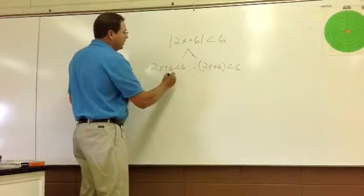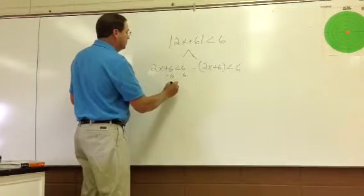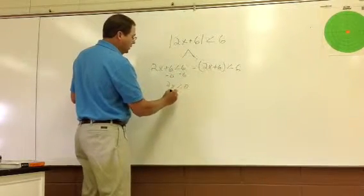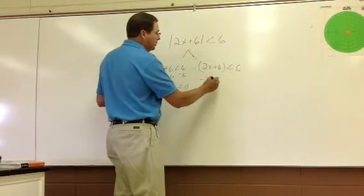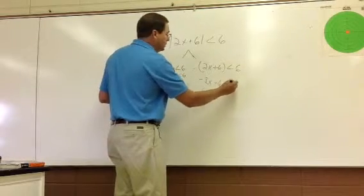So we solve this by moving six over, so x is less than zero. Notice the negative sign in front of the parentheses, so we have to change every sign in the parentheses.